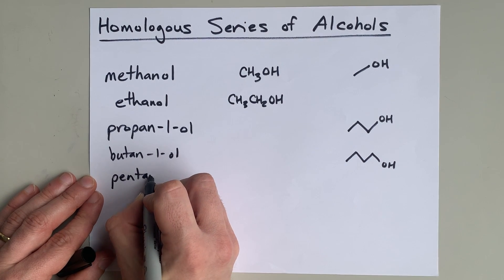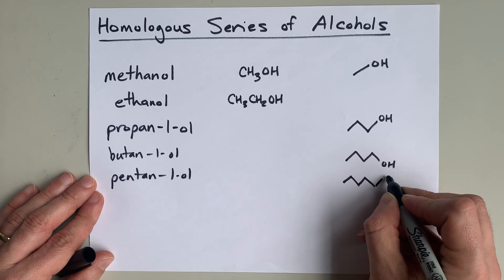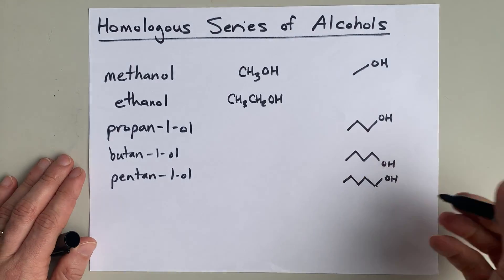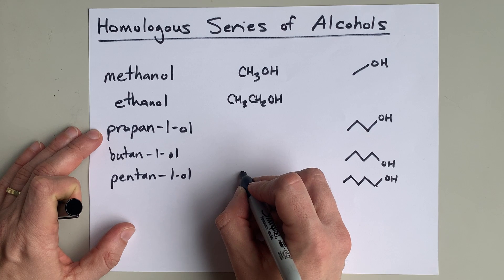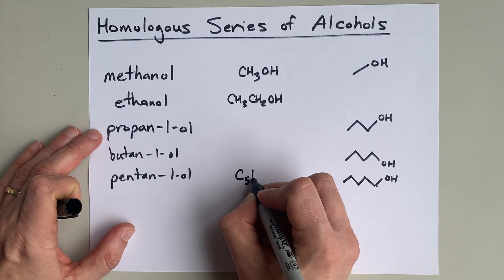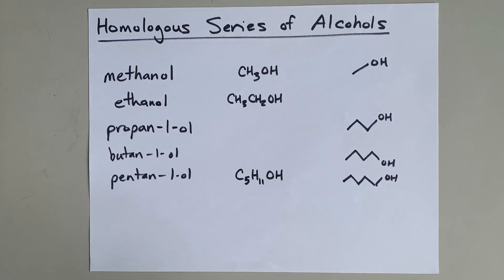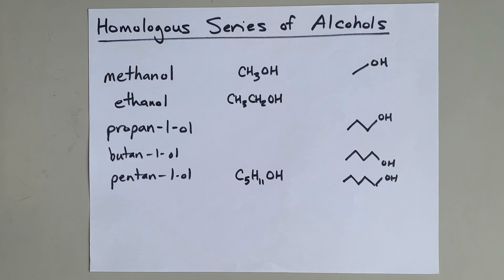Pentan-1-ol, where you have one, two, three, four, five carbons with an OH at the end. You can tell the carbon chains are just getting longer and longer. By the time you get to pentan-1-ol, C5H11OH, something like that. More carbons, a couple more hydrogens, and an OH at the end.